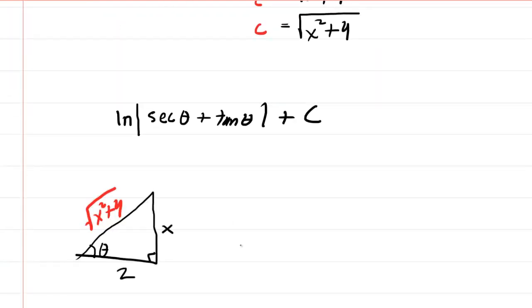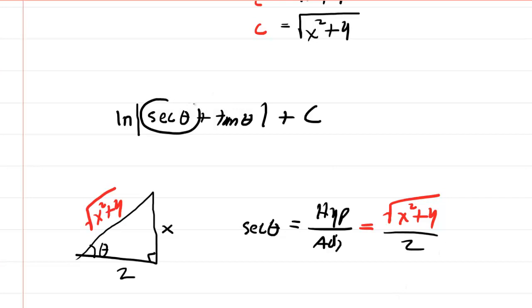Now, as far as secant of theta is concerned, remember secant is the reciprocal of cosine. Cosine is adjacent over hypotenuse, so this would be hypotenuse over adjacent. If you look back at your right triangle, the hypotenuse was the square root of x squared plus 4, and the adjacent side was just 2. So you're going to replace secant of theta with this expression right here.